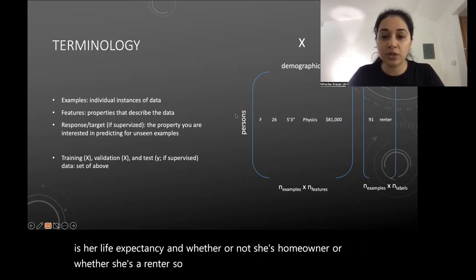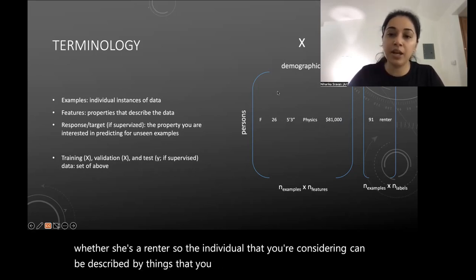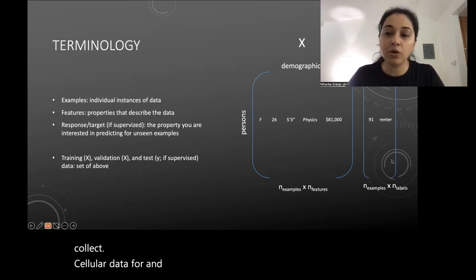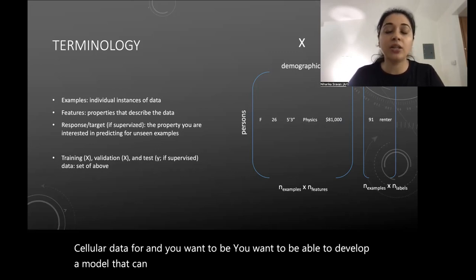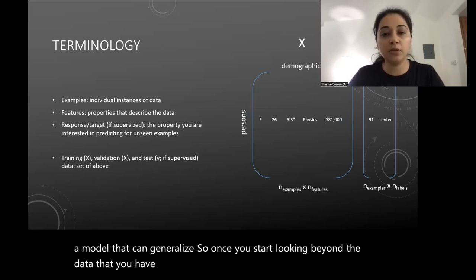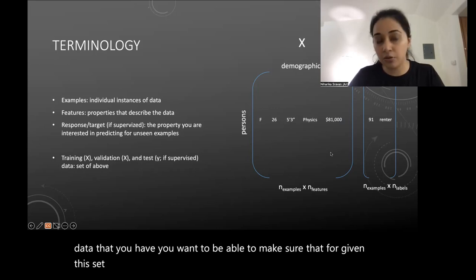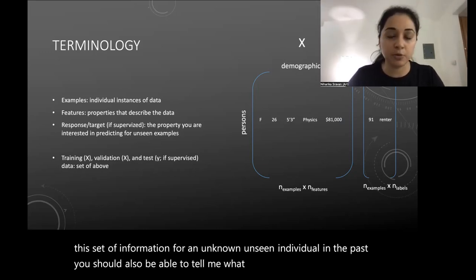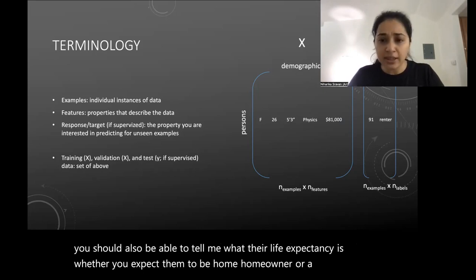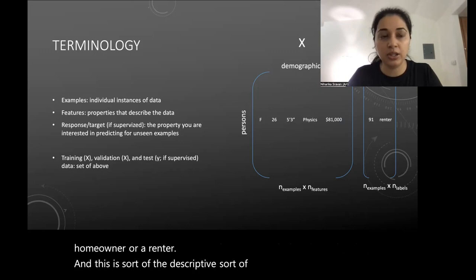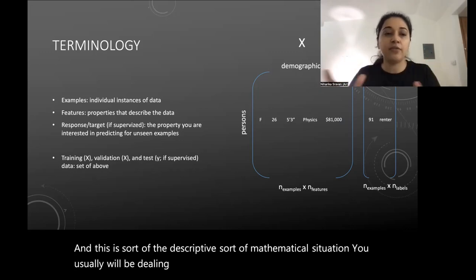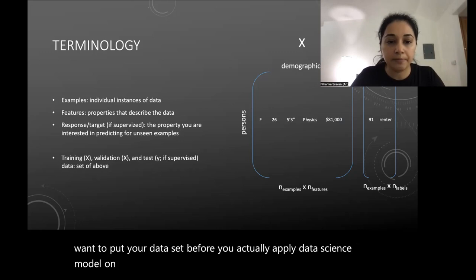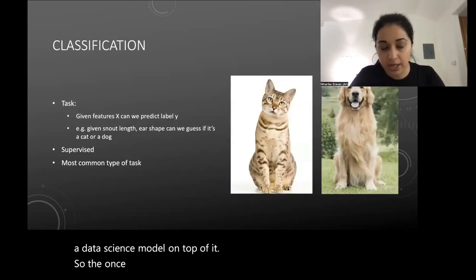You fill up this vector with many examples of many individuals that you collect similar data for, and you want to develop a model that can generalize. Once you look beyond the data you have collected, given a set of information for an unknown, unseen individual, you should also be able to tell me what their life expectancy is or whether you expect them to be a homeowner or a renter. This is the mathematical framework you put your dataset into before applying a data science model on top of it.